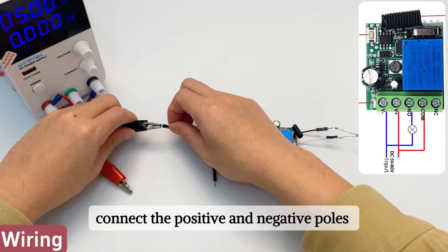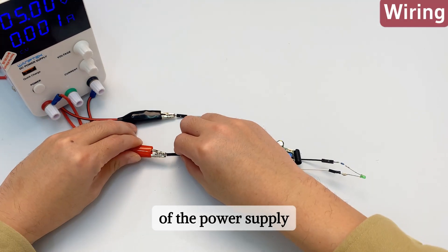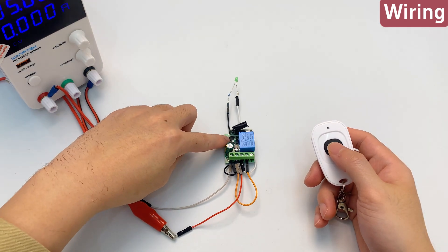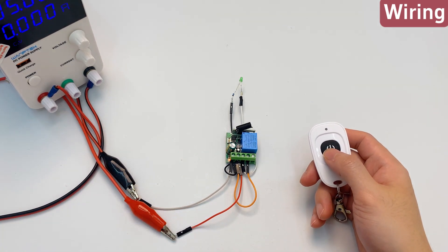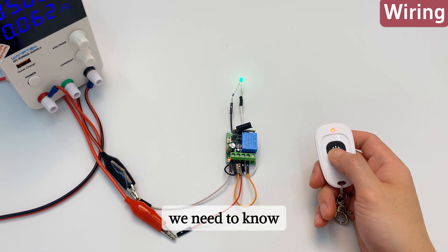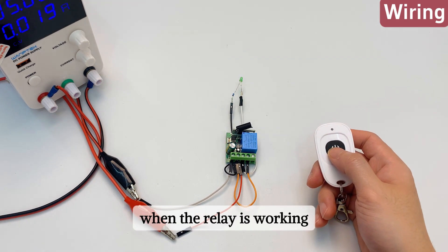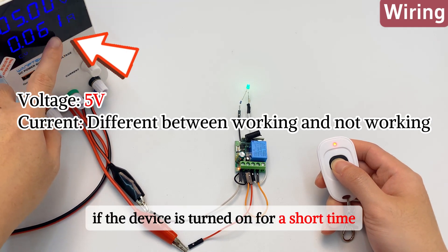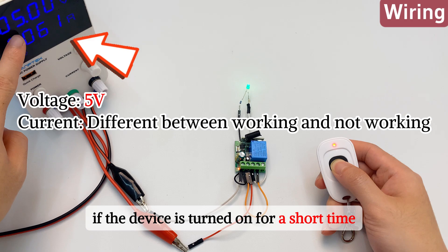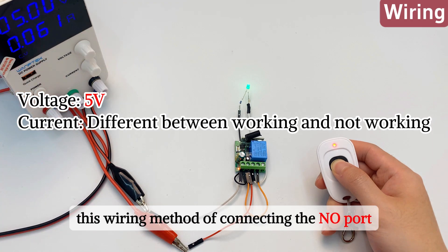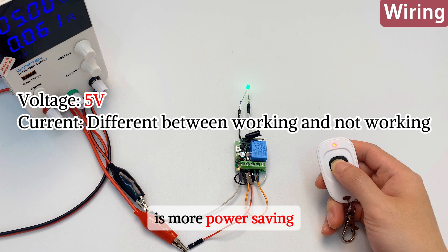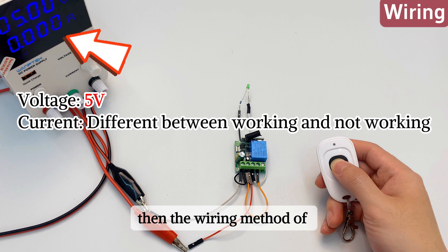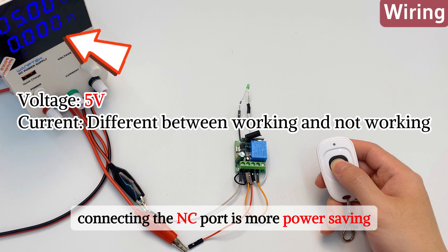Connect the positive and negative poles of the power supply. The controller can start working. We need to know when the relay is working, power consumption will increase. So if the device is turned on for a short time, this wiring method of connecting the NO port is more power saving. If the device is turned on for a long time, then the wiring method of connecting the NC port is more power saving.